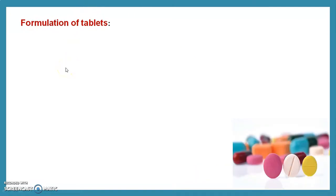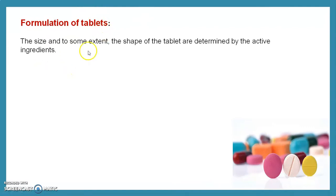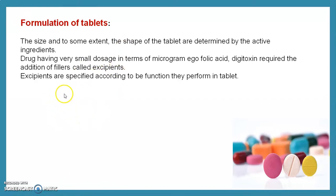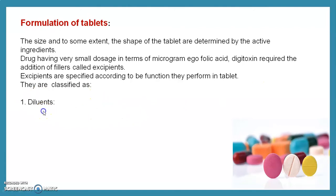Regarding tablet formulation: the size and shape of the tablet are determined to some extent by the active ingredient. Drugs with very small dosages in terms of micrograms — for example, folic acid and digitoxin — require addition of fillers called excipients. Excipients are specific according to the function they perform in a tablet and are classified as diluents, binders, disintegrants, lubricants, and glidants.